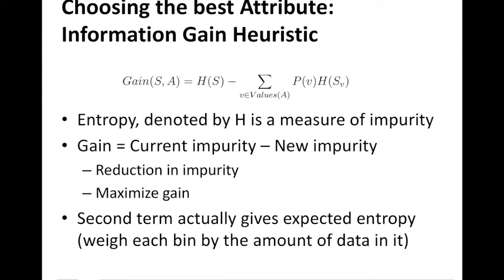The most popular metric used for splitting the data is the information gain heuristic. It uses entropy, which is a measure of impurity. This measure is chosen because it aligns with what we want — we want to create more purity in the subsets, so we measure the impurity and reduce it. Gain captures the current impurity given by the entropy and subtracts the new expected impurity if you split on the chosen attribute.